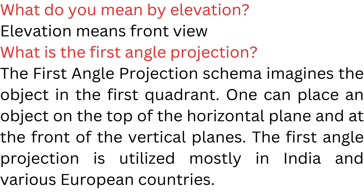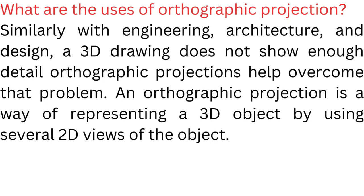What is first angle projection? First angle projection imagines the object in the first quadrant. One can place an object on top of the horizontal plane and in front of the vertical plane. First angle projection is utilized mostly in India and various European countries.